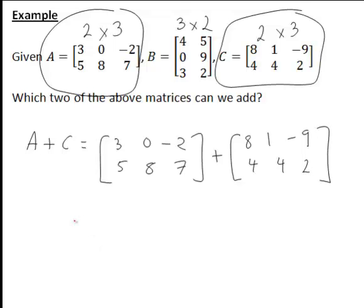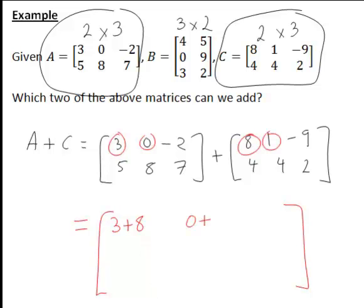And so once again the resulting matrix is clearly going to have the same order, again it is going to be a 2 by 3 matrix. So the first row, first column elements are added, so 3 plus 8 in the first row and first column of our new matrix. In the first row and second column of the new matrix, 0 plus 1, while in the first row, third column, -2 plus -9, which is -2 minus 9.